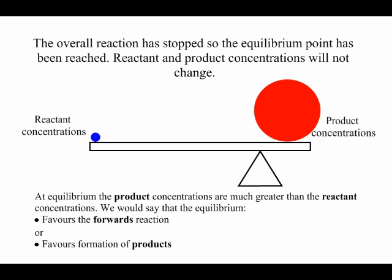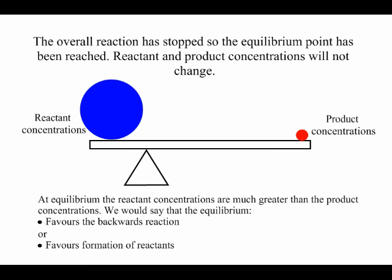If we have this situation we often use words to describe it. We would say that the equilibrium is favouring the forward reaction or favouring the formation of products because at equilibrium there's more products than reactants. The flip side of this is that if the equilibrium was the other way around we would say that it favours the backward reaction or favours formation of reactants because at equilibrium their concentration is the higher one.